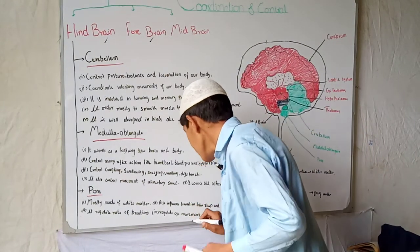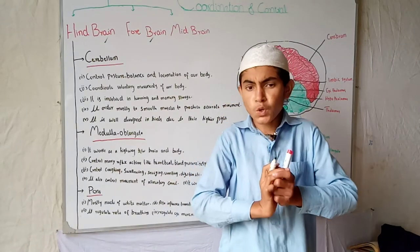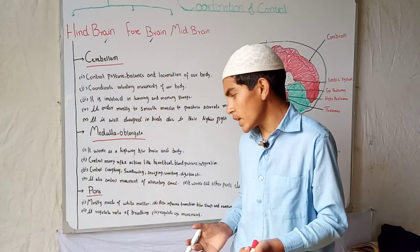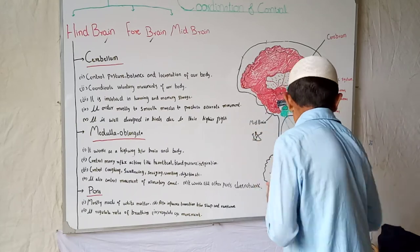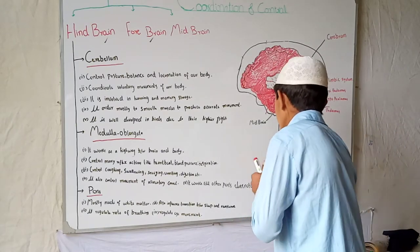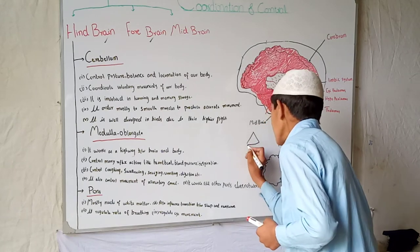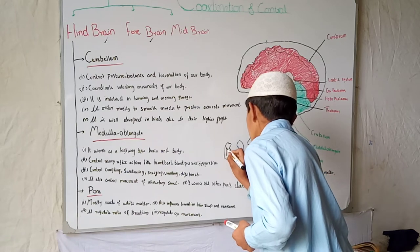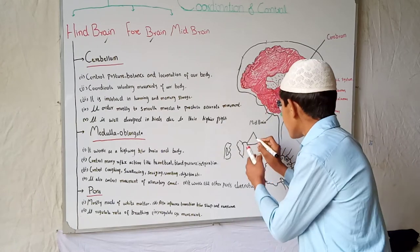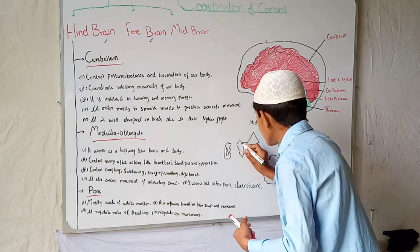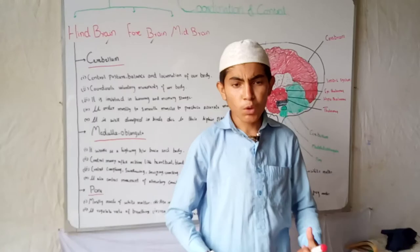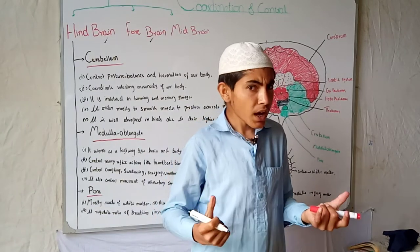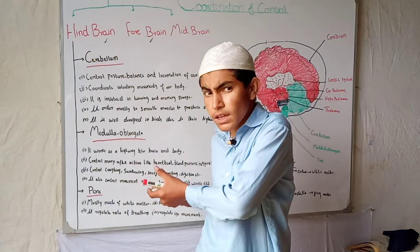The pons controls the transition between sleep and wakefulness — whenever we are sleeping or awake, the pons is working. It also regulates the rate of breathing. Neurons connect the pons with the rib cage, helping the rib cage move up and down to assist in breathing. That is why we are able to breathe during sleep — because of a healthy pons.